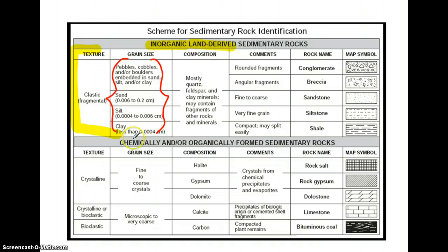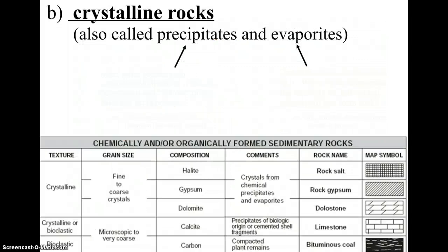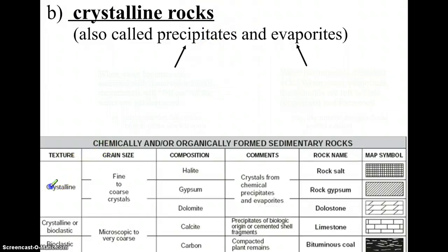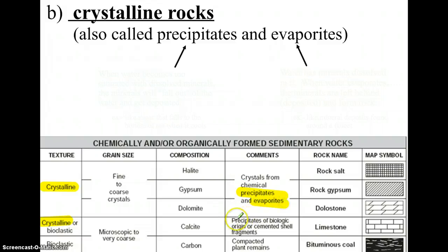Now let's take a look at rocks that are formed chemically. There are two processes that can form these chemical rocks. If you look at the bottom part of your chart, there is a texture described as crystalline, or crystals. The two processes that make these rocks are called precipitation and evaporation — you'll see those words on your reference table as precipitates and evaporates.